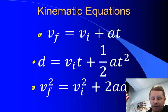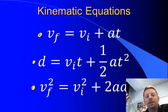And finally, the square of the final velocity is equal to the square of the initial velocity plus two times your acceleration times your displacement.